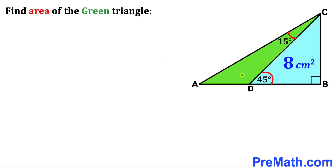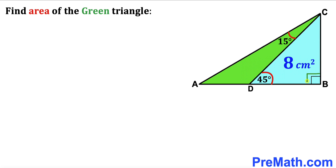Welcome to PreMath. In this video we have got green and blue triangles put together as you can see in this diagram, such that the area of this blue triangle is 8 centimeter square. The angle BDC is 45 degrees, this angle ACD is 15 degrees, and moreover this angle ABC is 90 degrees. Our task is to calculate the area of this green shaded triangle.